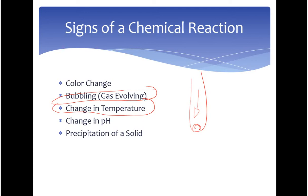You saw it with the reactions of calcium and with the percent composition lab. You also saw a change in pH because you used litmus paper to determine if the solution was acidic or basic. You found that the addition of calcium to water was indeed basic, meaning it was producing a base. So these three signs you have seen already.